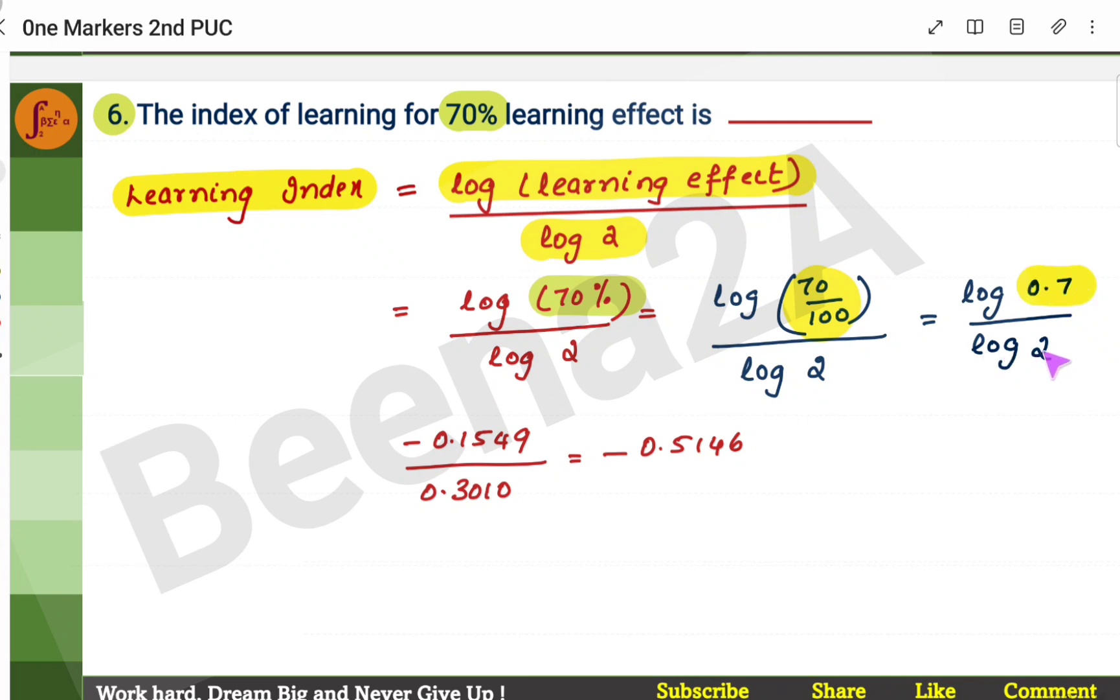You will get log of 0.7 by log of 2. So, if you use a scientific calculator, you can directly get log of 0.7 and log of 2. And this will be the answer. This is the learning index.